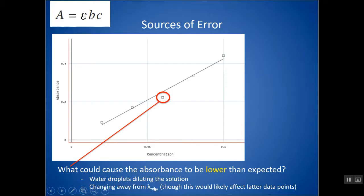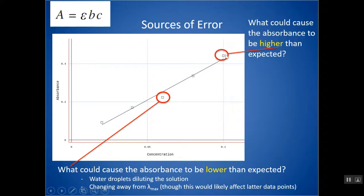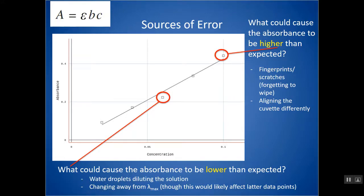If you're measuring away from the lambda max — less light would overall be absorbed. This would likely affect all later data points to also be lower, so that's probably not the source of error for one single low data point. If a data point is too high, fingerprints or scratches can absorb or scatter some light so less is detected, making it seem as if the substance is absorbing more. Not aligning the cuvette the same way — passing light through a spot with more scratches or smudges — can also cause a higher-than-expected absorbance reading.